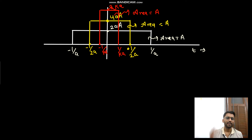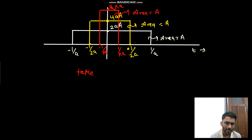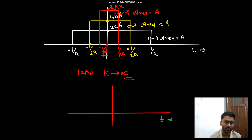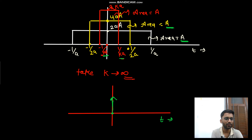Just as you reduce the x-coordinate, the magnitude keeps increasing. Now let k go to infinity. If k is infinity, the coordinate becomes 0, and the magnitude goes to infinity — but the area remains a only. The magnitude goes to infinity but the area stays at a.